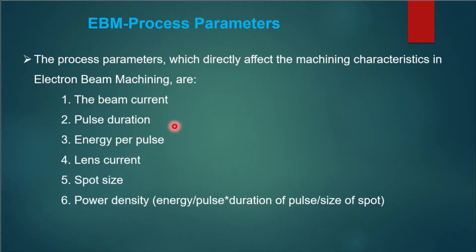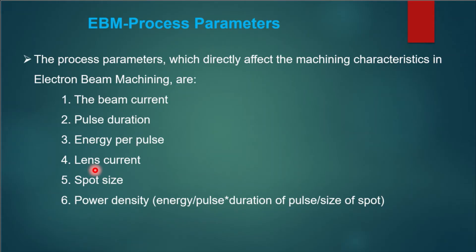The process parameters that control electron beam machining are: beam current, pulse duration (how much time the voltage is switched on so that electrons come out from the cathode), energy per pulse (how much energy is imparted to each pulse), lens current (the current through the magnetic lens), spot size (the area the electron beam creates on the workpiece), and power density. Power density is a function of energy, pulse duration, and the size of the spot.